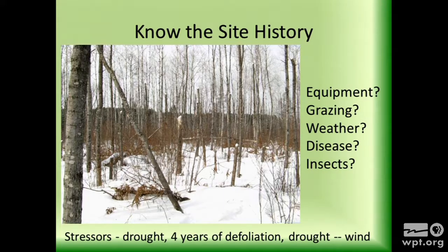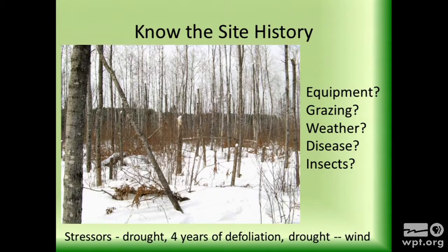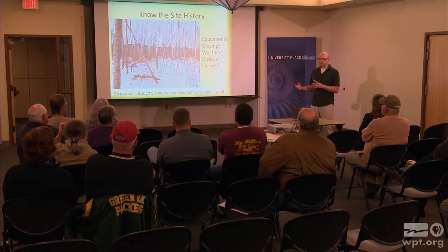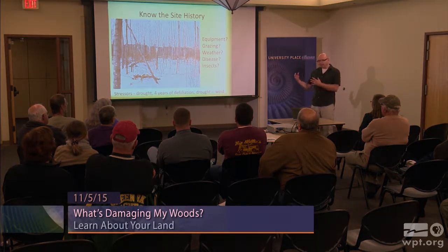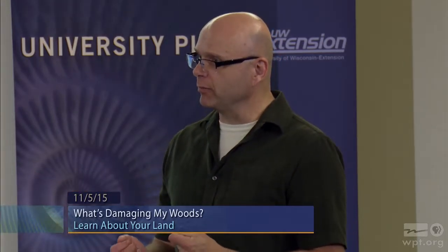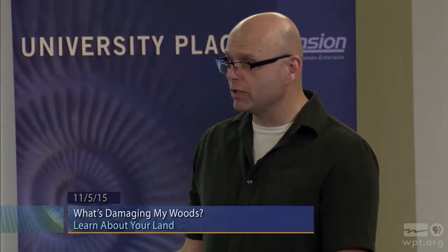Knowing the site history is important too. You might have had heavy equipment on your property, or animals grazing, or weather damage. In this case it looks like the tops of the trees were just snapped off by wind, but there was a lot more going on. The first year there was a heavy drought, then the next four years an insect infestation was defoliating the trees, then another drought. The trees were growing very slowly, so when a strong wind came through it snapped them right off. There's a lot that can lead to trees being stressed and weakened so they're susceptible to wind damage, because most trees should be able to handle some heavy wind.